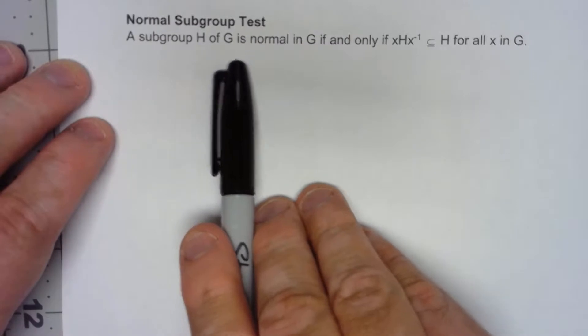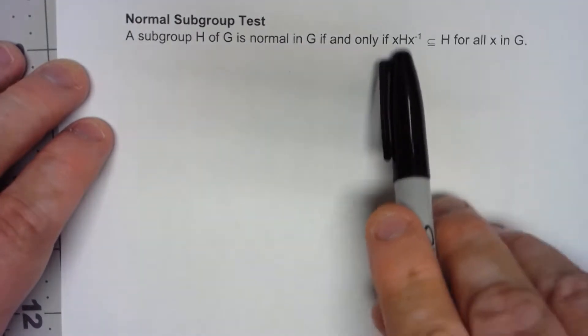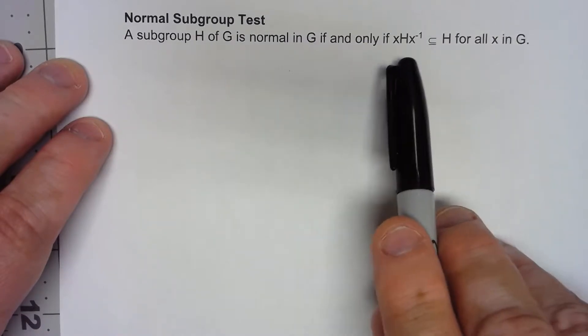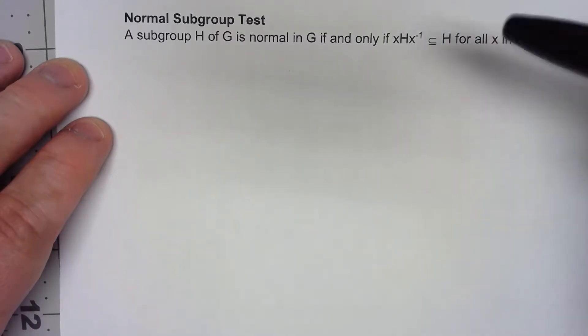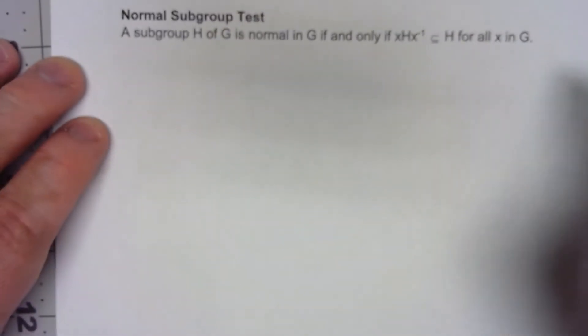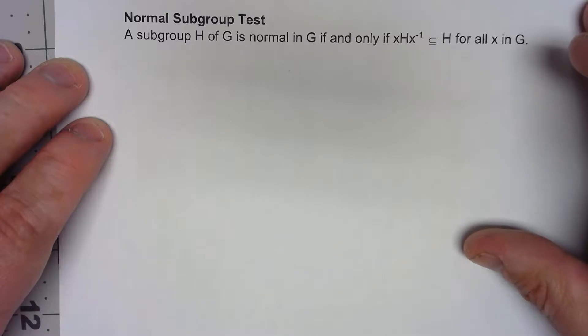So subgroup H of G is normal in G if and only if when I take that subgroup and do what we call conjugating it by X, taking xHx^(-1), we don't need to think about groups or cosets, all it is is that that has to be a subset of H for all x in G. Okay, let's show how this works.